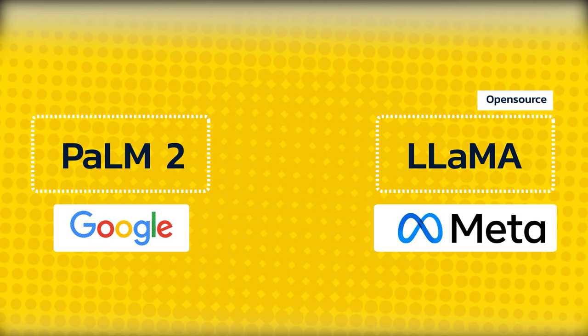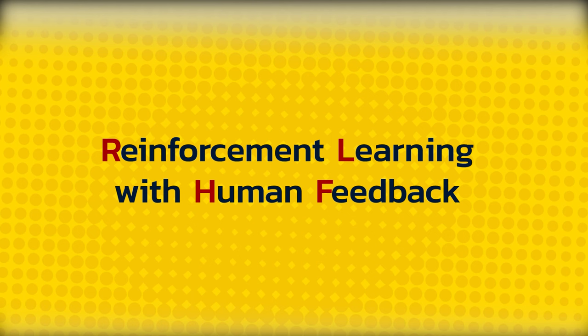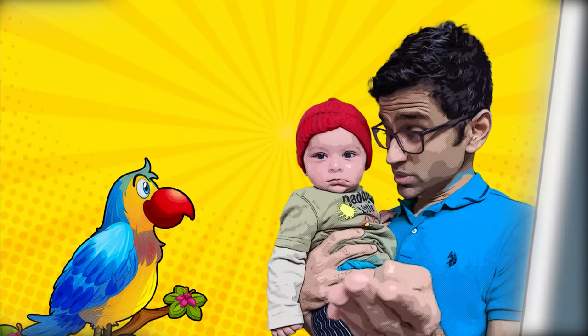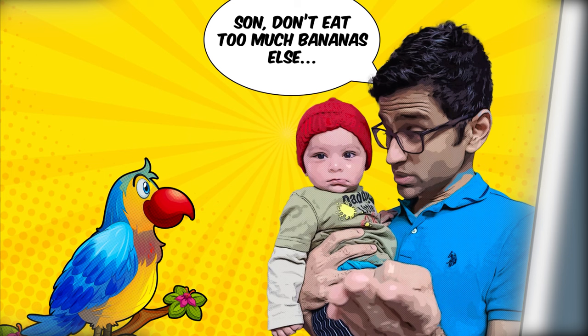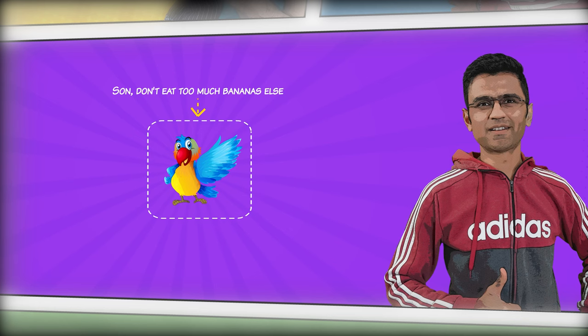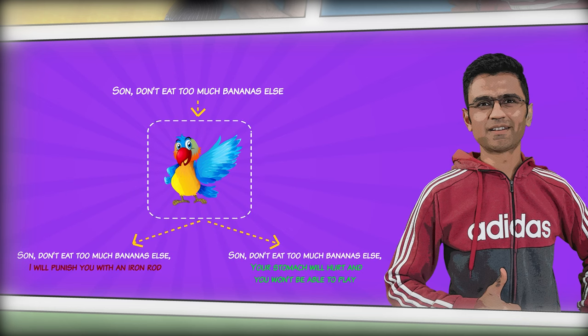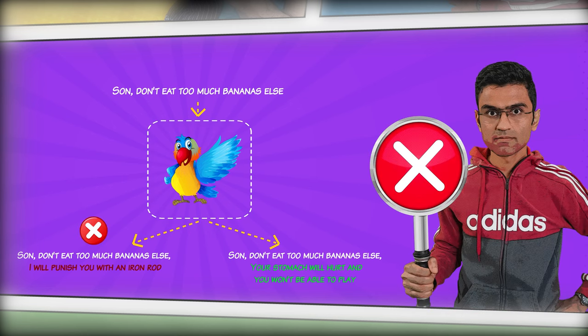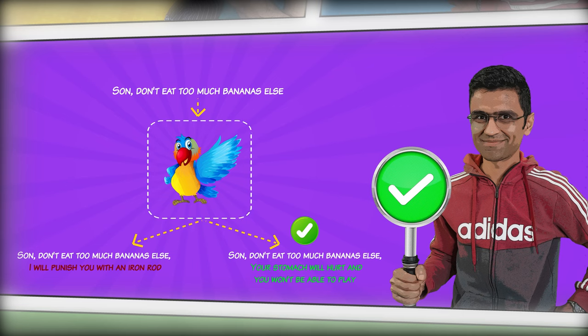On top of statistical predictions, LLMs use another approach called Reinforcement Learning with Human Feedback, or RLHF. Let's understand this with Buddy. One day, Peter was having a conversation with his cute little two-year-old son, saying 'don't eat too many bananas, else I will punish you with an iron rod.' Hearing this, Peter realized that Buddy had been listening to conversations from abusive parents in his town, and what he said was the effect of that. Peter then starts keeping a close eye on what Buddy is saying. For the same question, Buddy can produce multiple answers, and all Peter has to do is tell him which one is toxic and which one is not. After this training, Buddy doesn't use any toxic language.